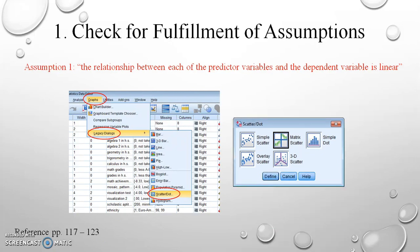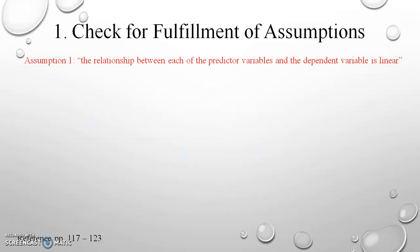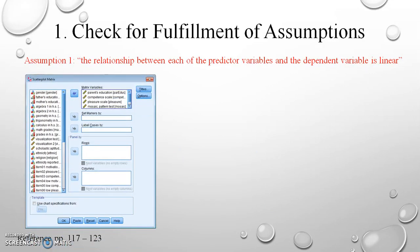The scatter dot dialog box appears and we select the Matrix Scatter option, then select Define to proceed. The scatter plot matrix dialog box appears, and we move all the independent and dependent variables from the left-hand panel into the matrix variables box.